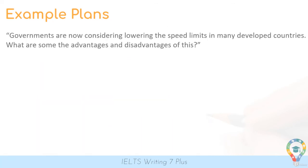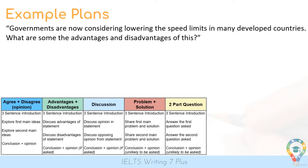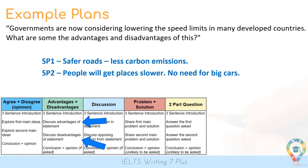One more example: 'Governments are now considering lowering the speed limits in many developed countries. What are some of the advantages and disadvantages of this?' Think about how you would organise your plan — SP1, SP2 — and would you write O for opinion? Have you been asked? Looking at the master structure: advantages and disadvantages — supporting paragraph one, discuss the advantages; supporting paragraph two, discuss the disadvantages. And we are not including opinion in this plan.